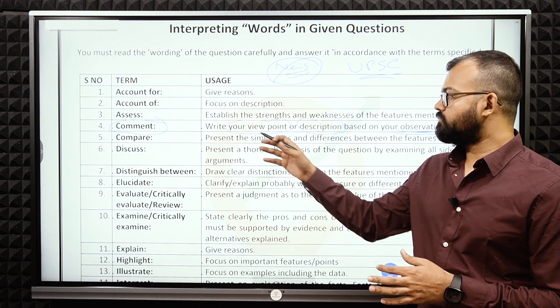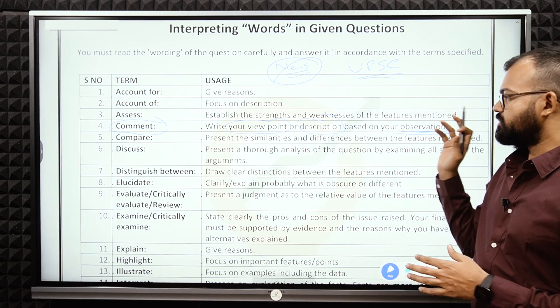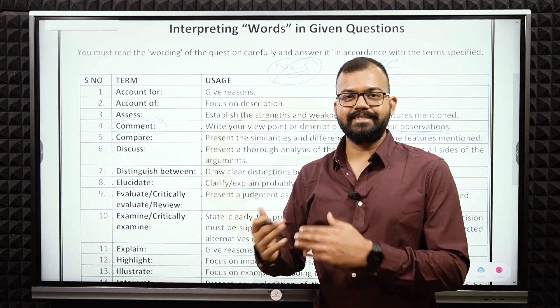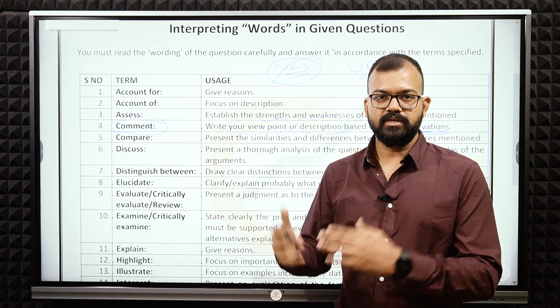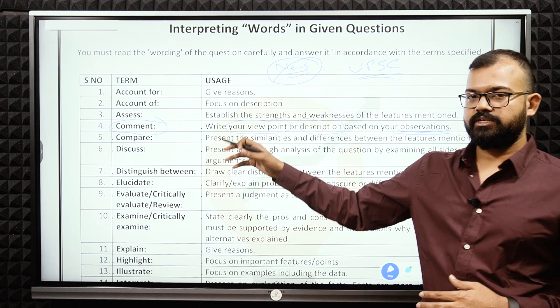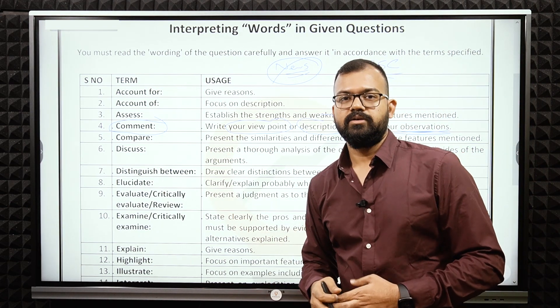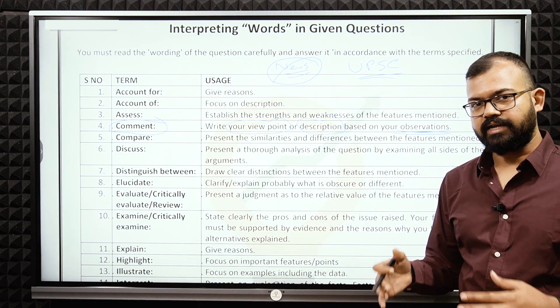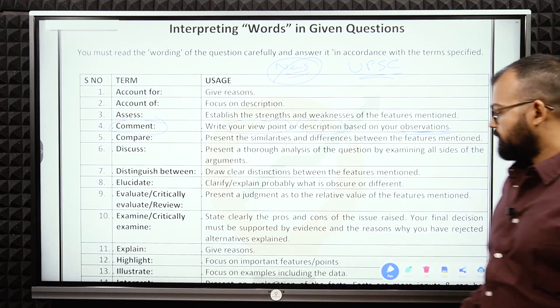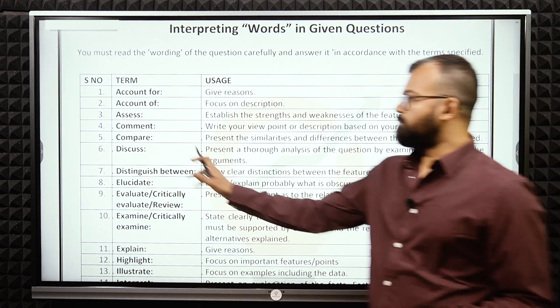Just commenting. Like very simple example right now, Afghanistan crisis is going on. Comment on the current geopolitical situation in Asia or Central Asia. This is the question. Now you have to comment. Comment your viewpoint, description, observation. Why comment? Because the crisis is still on. There's a tussle. So you can comment. You cannot conclude that. Whatever the development till that time, you have to comment on that.